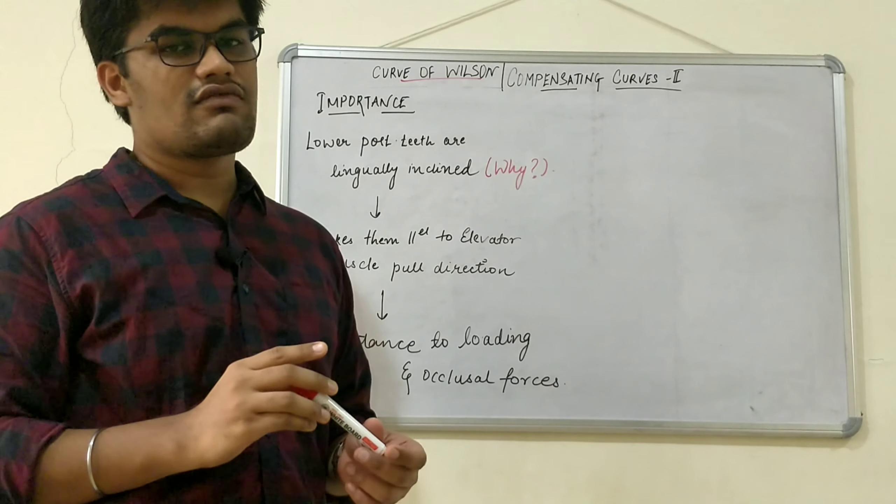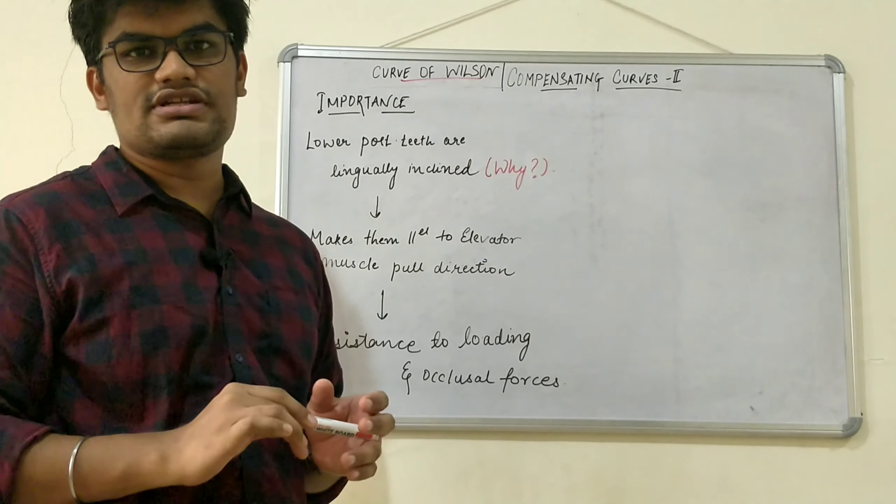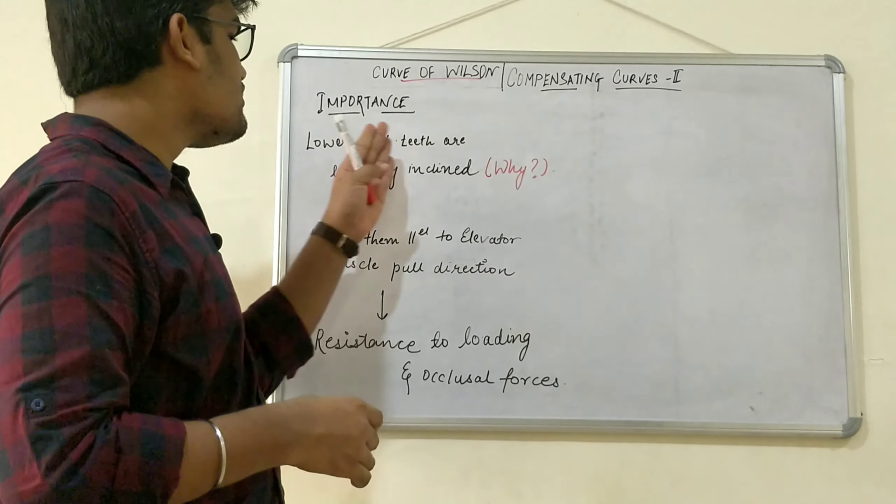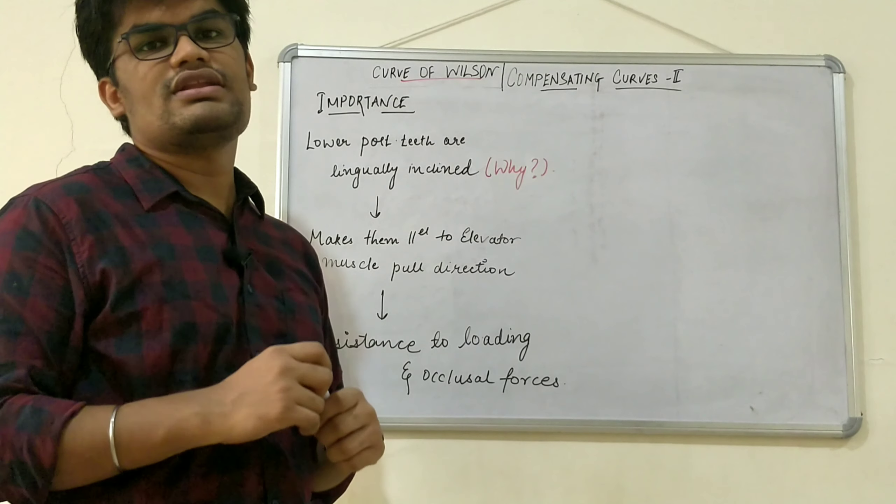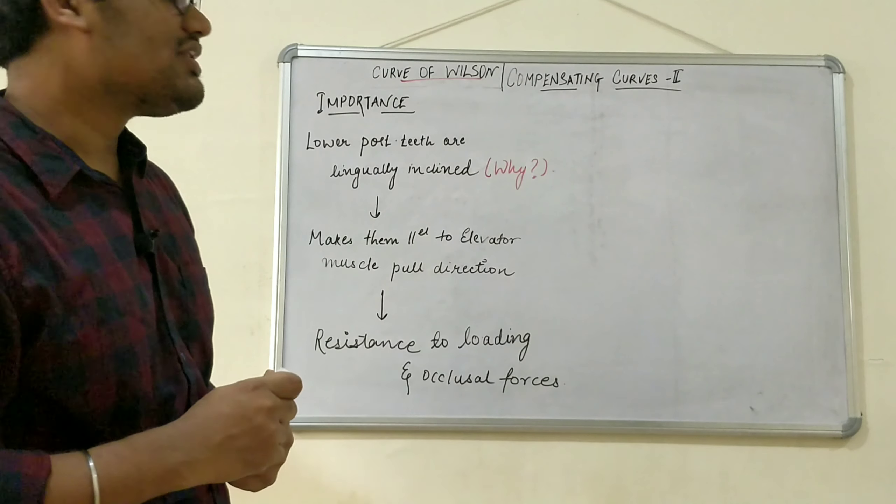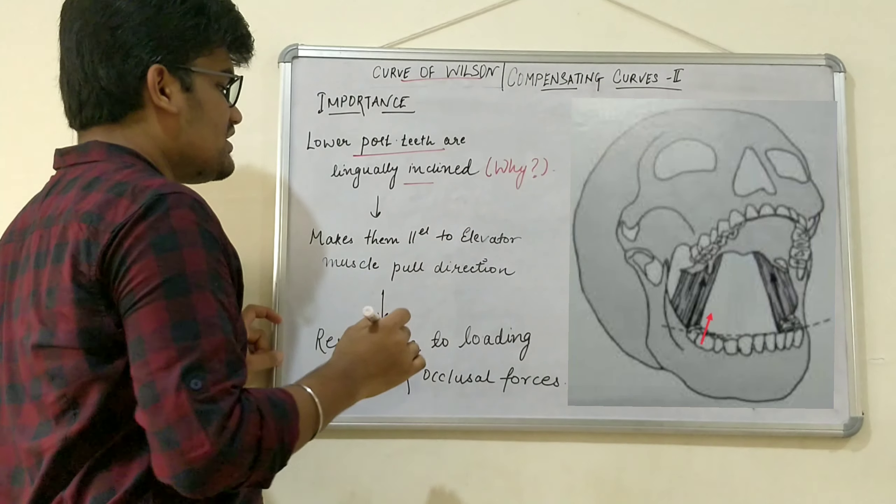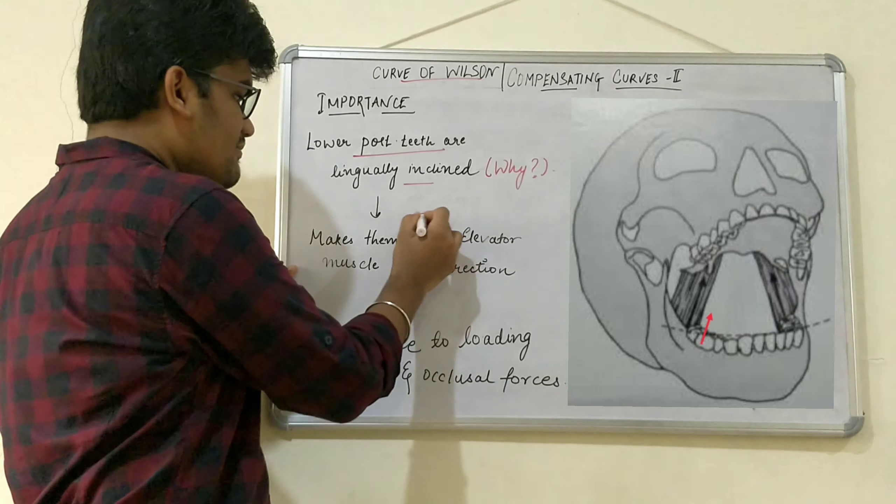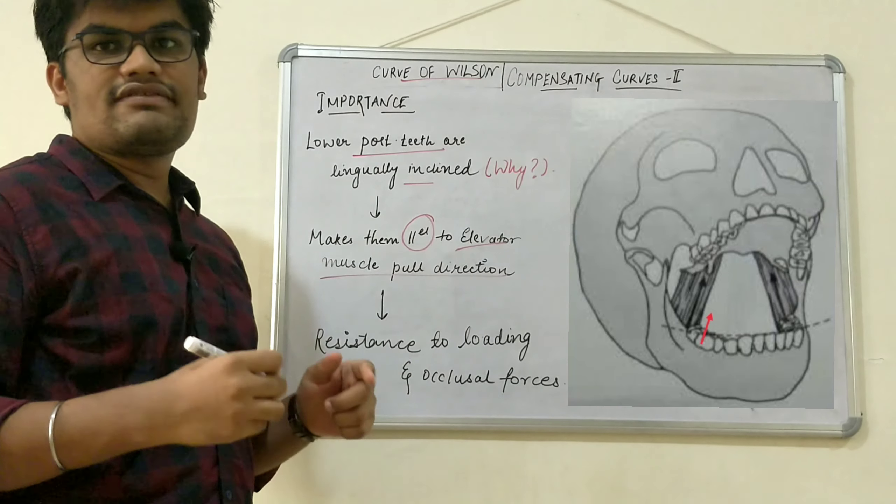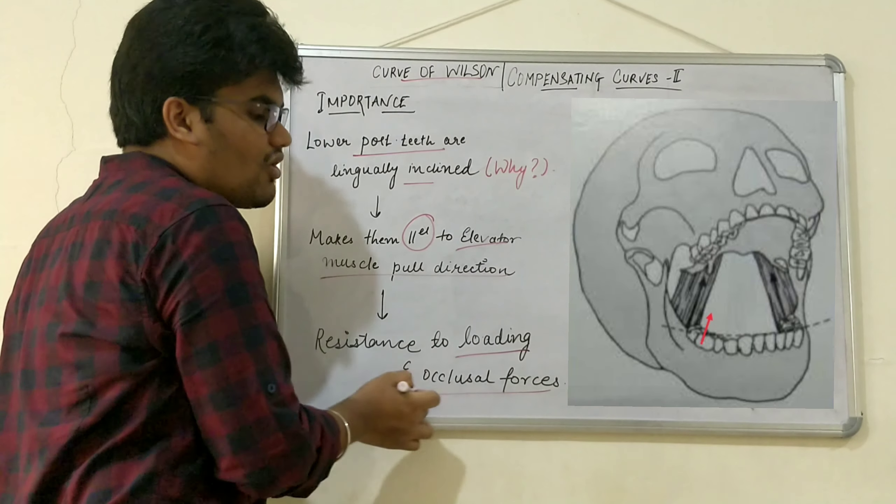Coming on to the importance of curve of Wilson. As we have already seen, the curve is concave in mandibular posterior teeth and convex in maxillary posterior teeth, especially premolars. Lower posterior teeth are slightly lingually inclined. But why do we need that position? As they are lingually inclined, this makes them parallel to the elevator muscle pull direction, which provides resistance to loading and occlusal forces.